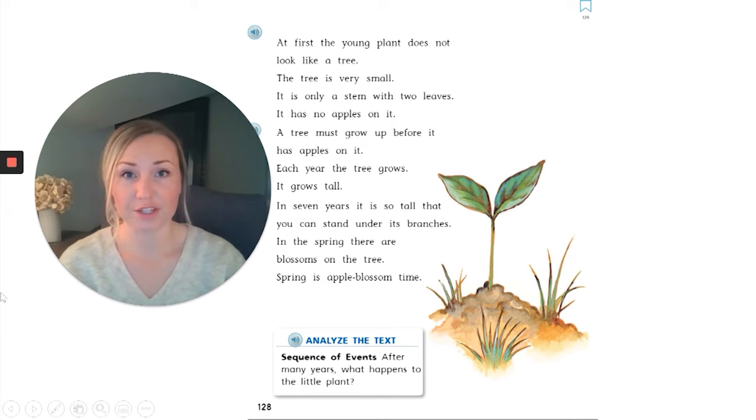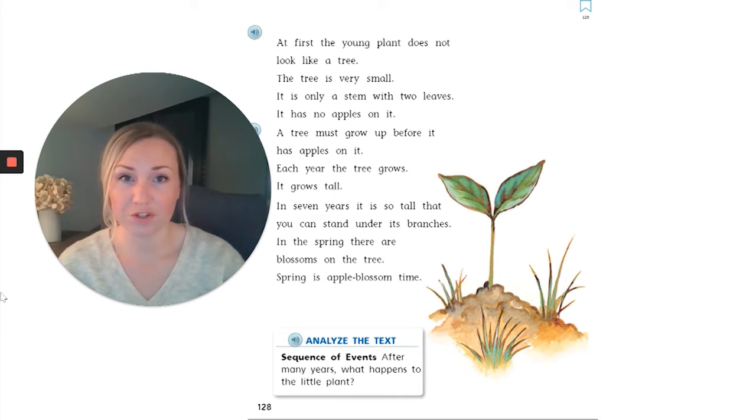At first, the young plant does not look like a tree. The tree is very small. It is only a stem with two leaves. It has no apples on it. A tree must grow up before it has apples on it. Each year the tree grows. It grows tall. In seven years it is so tall that you can stand under its branches. In the spring there are blossoms on the tree. Spring is apple blossom time.